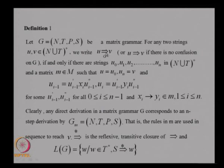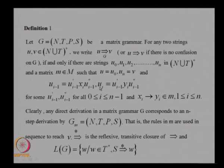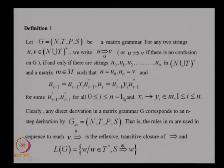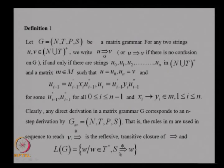The language generated consists of terminal strings w such that starting from the start symbol you can derive w by the application of matrices. Any direct derivation corresponds to an n-step derivation when looking at single rules. You have to apply the rules in sequence and finally end up with a terminal string.